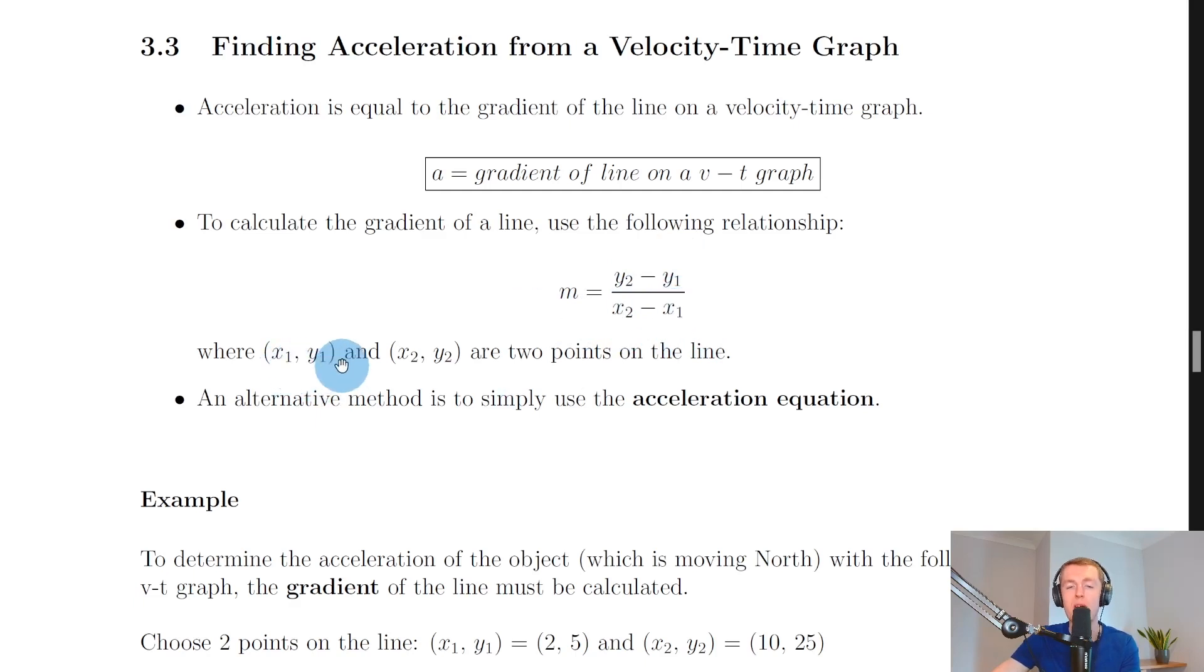Where x1, y1 and x2, y2 are two points on the line. So if you've got a straight line on a velocity-time graph, you choose two points on that line of best fit and you plug it into this equation to find the gradient, and that gradient will be equal to the acceleration in meters per second squared.